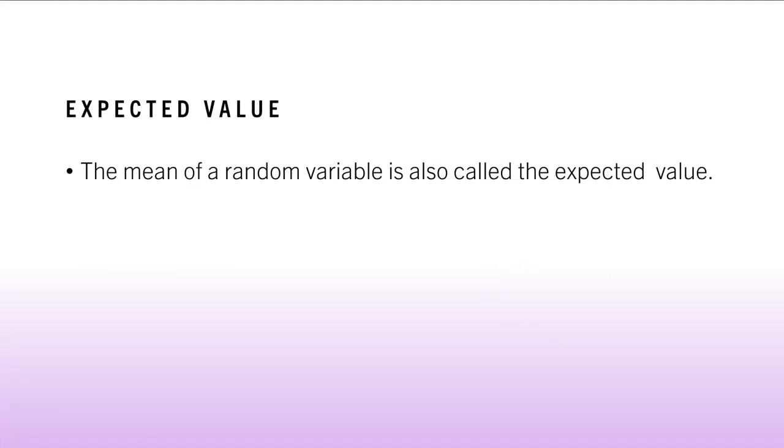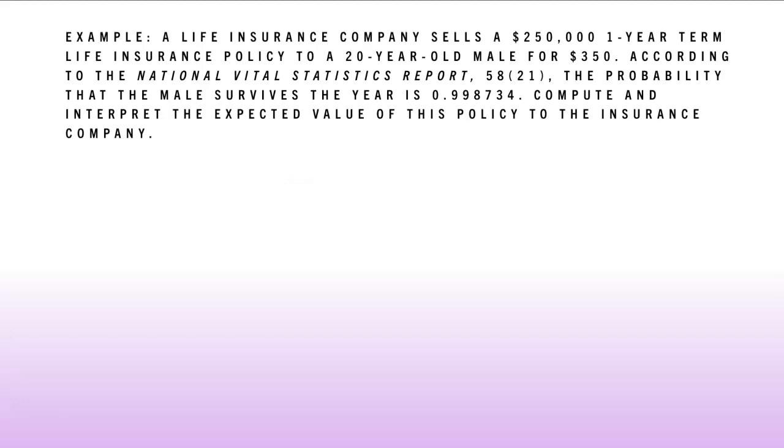The mean is also called the expected value. So another name for the mean of a discrete random variable is the expected value. So here's another example. A life insurance company sells a $250,000 one-year term life insurance policy to a 20-year-old male for $350. According to the National Vital Statistics report, the probability that the male survives the year is 0.998734. Compute and interpret the expected value of this policy to the insurance company.